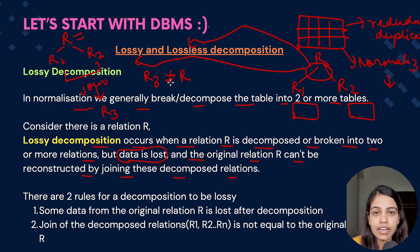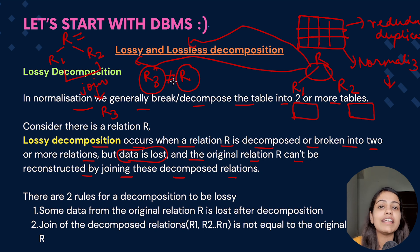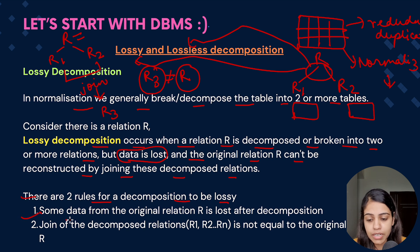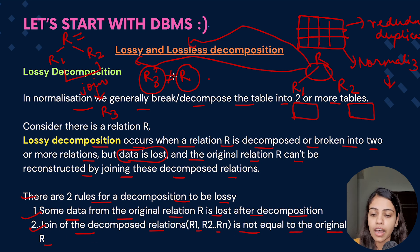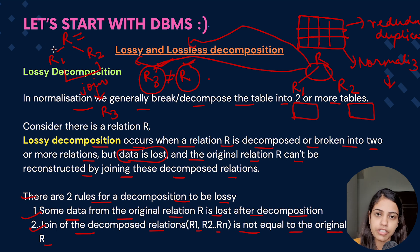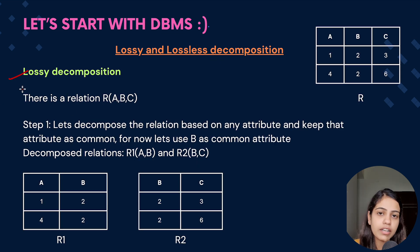Some data is lost and some data may be repeated as well. The data present in R3 is not equal to the data present in R — data is not preserved. There are two rules for a decomposition to be lossy. First, some data from the original relation R is lost after decomposition, so R3 is not equal to R. Second, the join of decomposed relations R1, R2 through Rn is not equal to the original relation R.